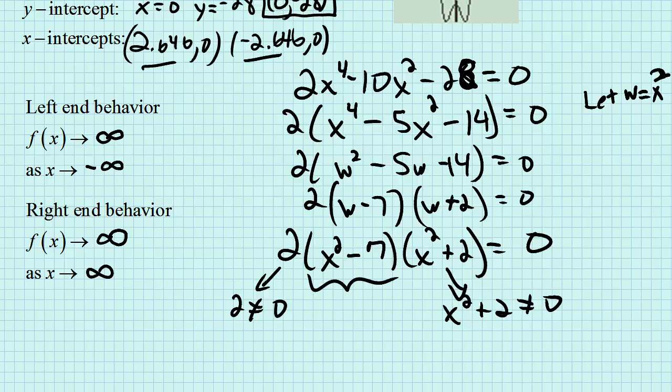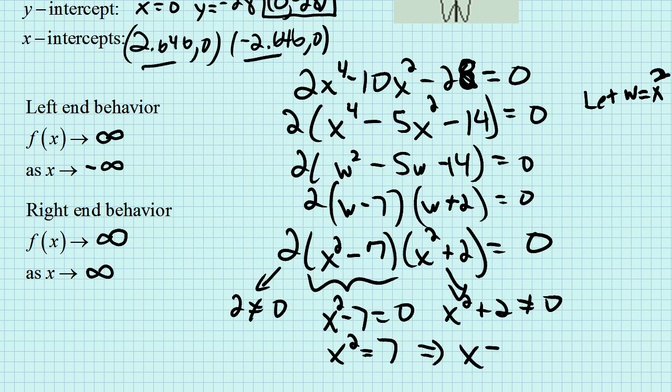If the product is going to be zero, it's going to have to be from this term: x squared minus 7 equals zero, or x squared is 7. Giving us the fact that x is plus or minus the square root of 7.